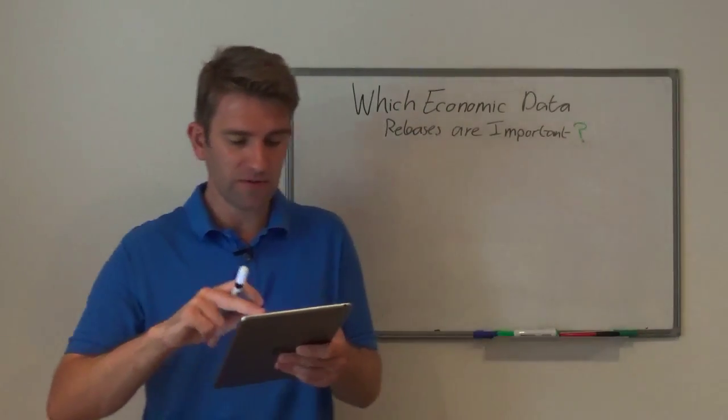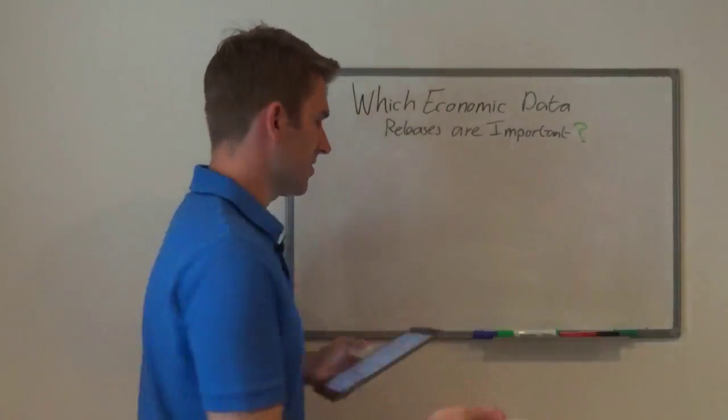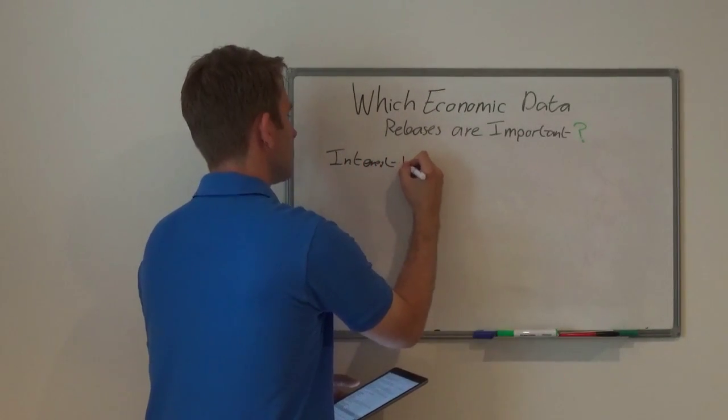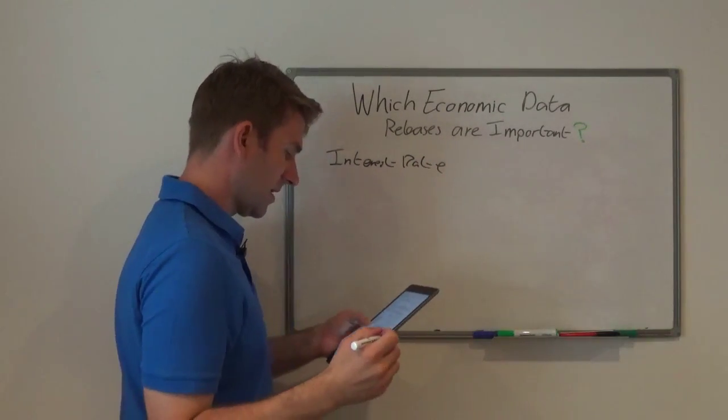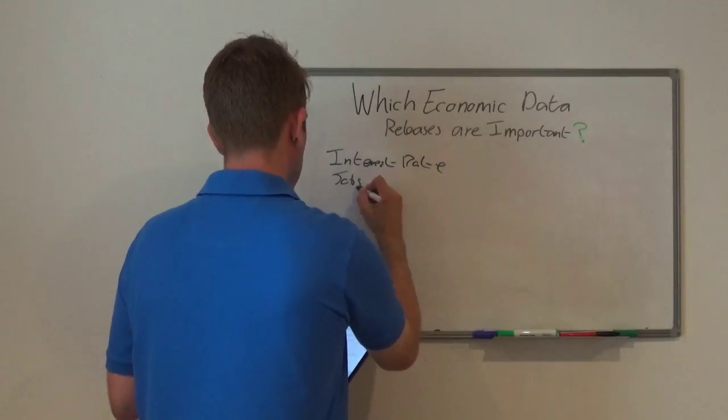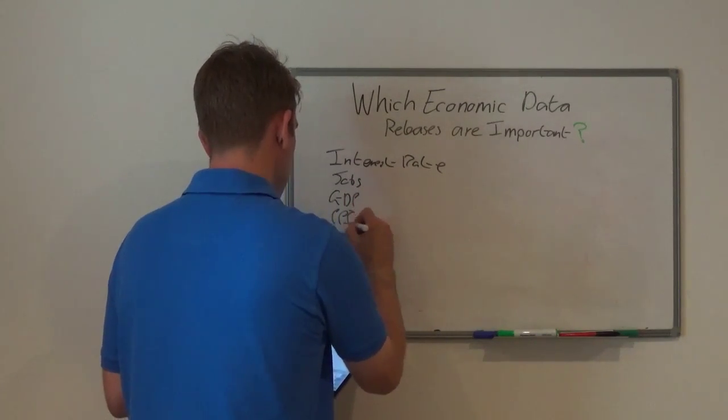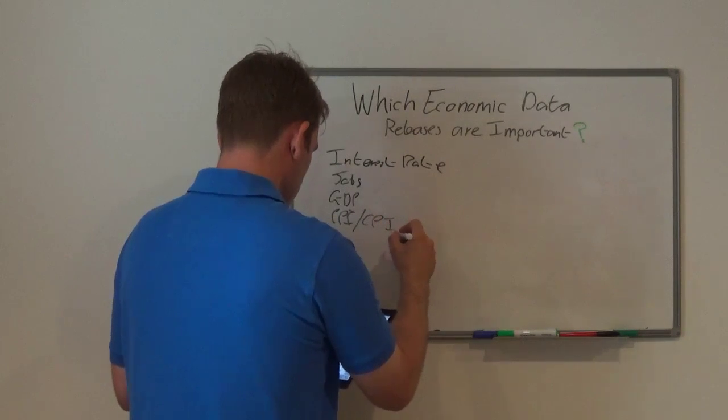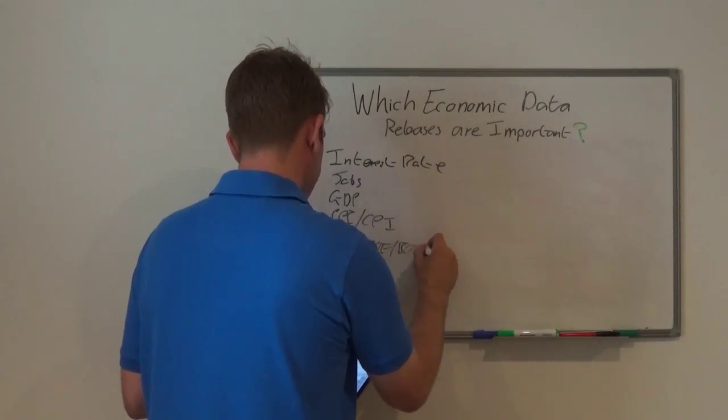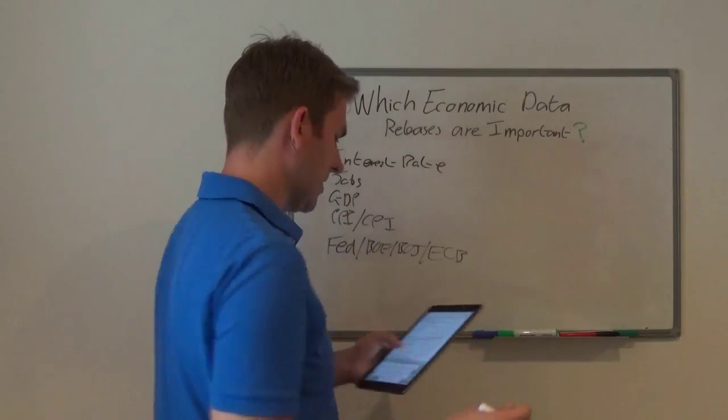So the big ones are: interest rate announcements, that is a big one. We've also got jobs numbers, unemployment rate, we've got GDP, we've got PPI, we've got CPI, we've got Fed and BOE, BOJ, ECB. We have confidence numbers, PMI, and we'll talk about all of these in a second.